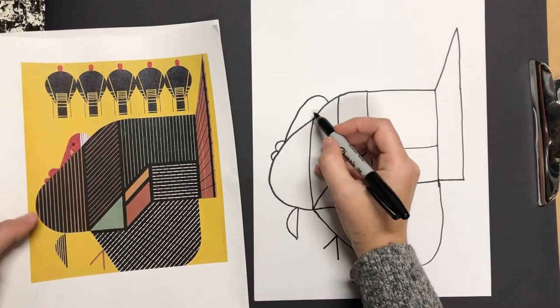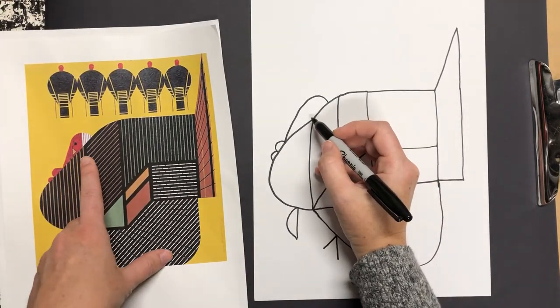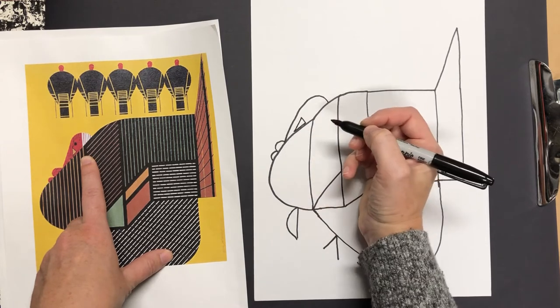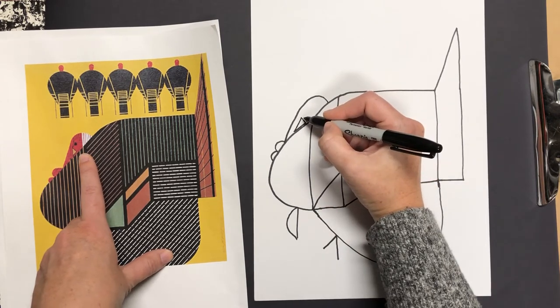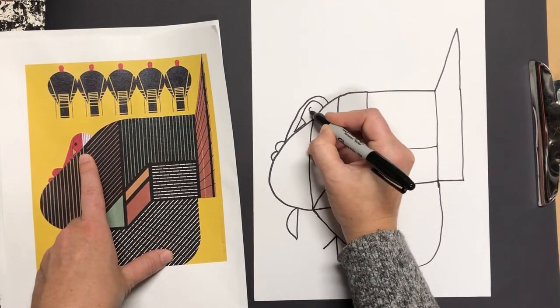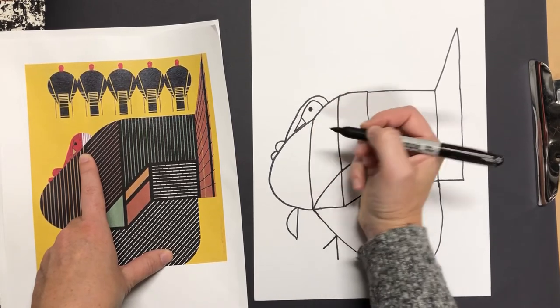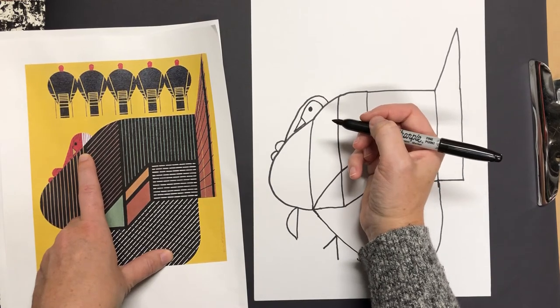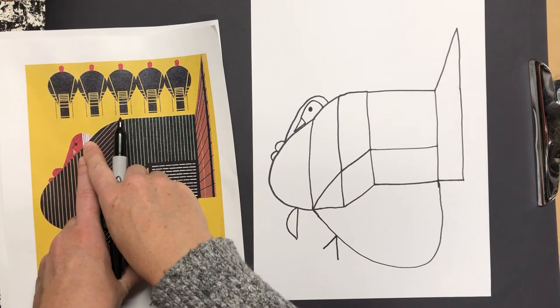So inside here, you can create your turkey face. Triangle for the beak, curve for the head, and then the eye. If you would like to do yours a different way, you can. I did mine a little bit different from his.